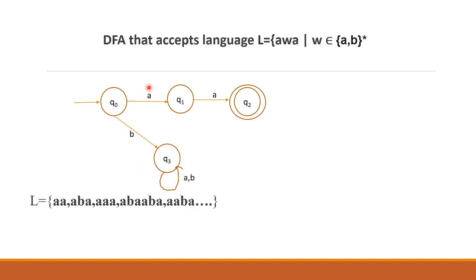The trap state loops on 'a' and 'b'. Now for Q1: on input 'b', Q1 loops back to Q1, because we are still inside the string 'awa' — 'b' is part of w. On input 'a', Q1 goes to Q2, the final accept state. Q2 is our final state — it represents having seen a string of the form awa. Once Q2 is reached, the string 'aba' or 'awa' is accepted.